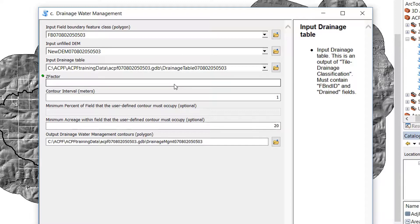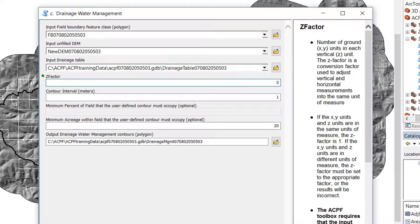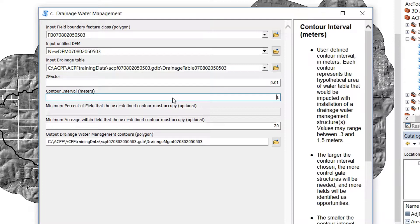The drainage table has been automatically added. It's asking for a Z factor. So we'll do that at 0.01. And then the user specified contour interval in meters. I'm going to leave it at one.